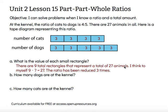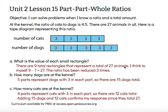I have 5 rectangles that represent 5 groups of 3 dogs. So 5 parts represent dogs, with 3 in each part, so there are 15 dogs total at the shelter. How many cats are at the kennel? I've got 4 groups of 3, so there are 12 cats total.